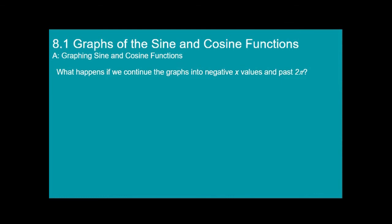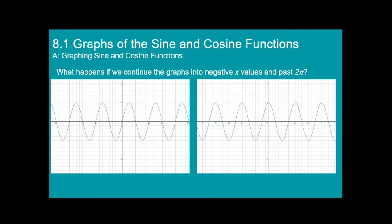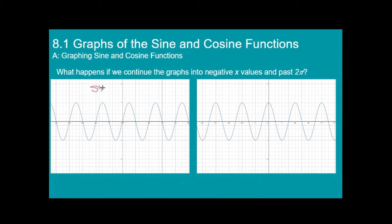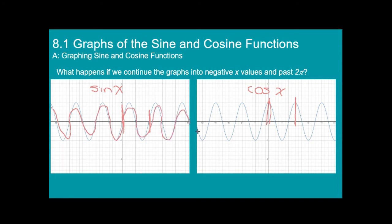What happens if we continue the graphs into negative x values and past two pi? If we extend our domain past what we had chosen before, this is what you would get. Because this one starts at zero when x is zero, we know this is the sine x graph. Because this one starts at one when x is zero, we know this is cosine of x. Notice we get that same wave pattern all the way in both directions, and you can tell it's going to continue forever.